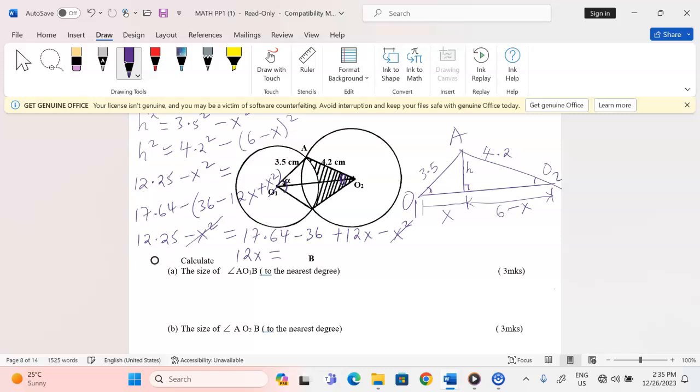This equals, when we take 17.64 minus 36 to the other side where it becomes addition, we add 12.25. This gives us 30.61. So the value of X becomes, when we divide this by 12, 2.55 centimeters.